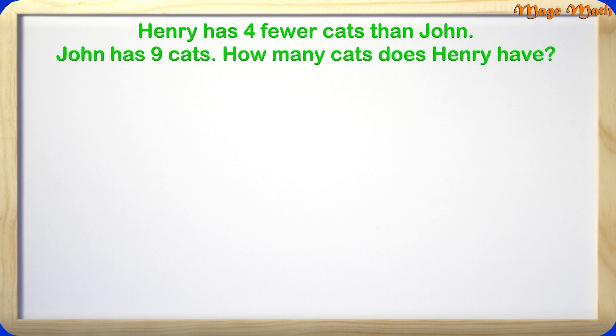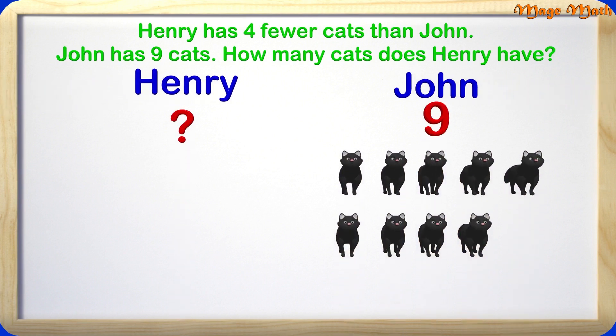In the problem we don't know how many cats Henry has, and we need to find that out. We know that John has 9 cats, and Henry has 4 fewer cats than John. The word fewer means a smaller number. Having the word fewer in the problem helps us know we will need to subtract to get our answer.